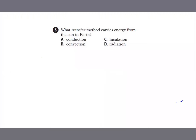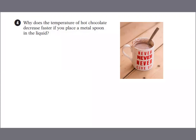Which heat transfer method carries energy from the sun to the Earth? Radiation. Why does the temperature of hot chocolate decrease faster if you place a metal spoon in the liquid? Heat always flows from an area of high energy to low energy — from the hot chocolate into the cooler spoon. Energy moves from the chocolate to the spoon, so the chocolate's energy must decrease for the spoon's energy to increase. The spoon heats up and the hot chocolate cools down — law of conservation of energy.